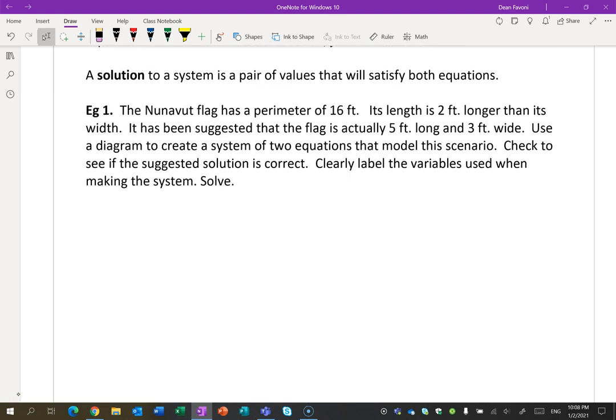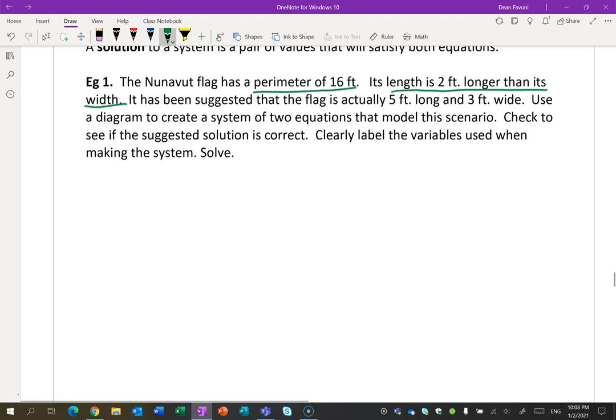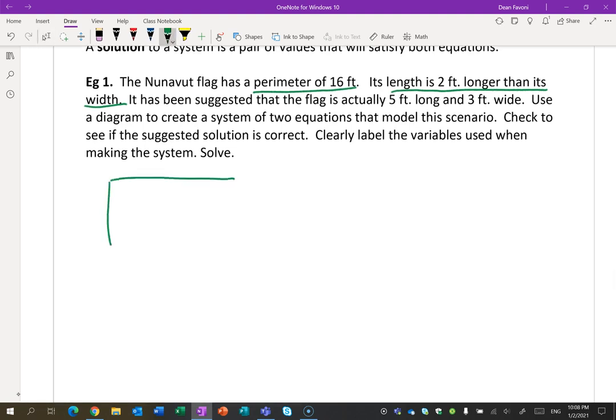Let's start with the first one here. It says the Nunavut flag has a perimeter of 16 feet. I'd say that would be important. The length is 2 feet longer than the width. It has been suggested that the flag is actually 5 by 3. Let's use the stuff we've underlined in green here to come up with a system. So here's a rectangle, here's the flag. They talk about a length and a width.